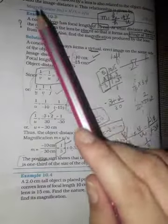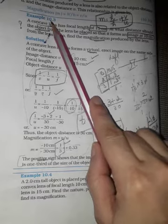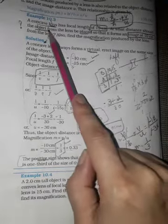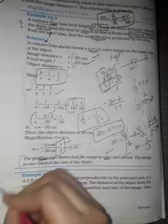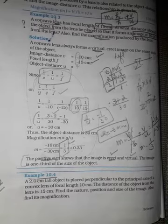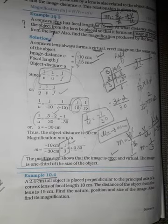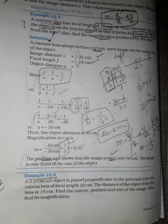Hello students, we have recently done example 10.3 which is on page number 182, and now we are going to solve the numerical which is on page number 182, example number 10.4. We are solving the numerical first so that we can understand the lens formula in a better way.